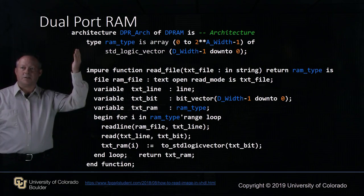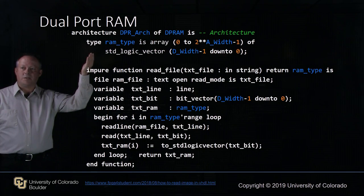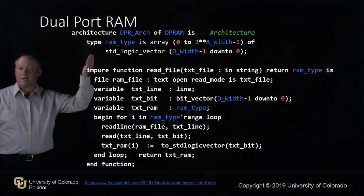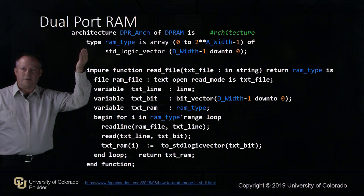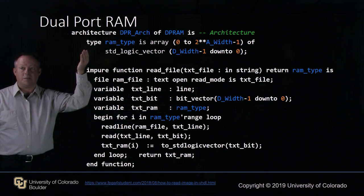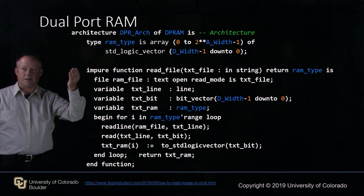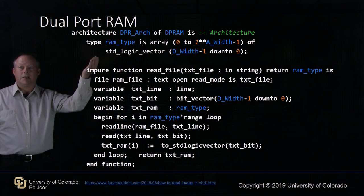In our architecture we're going to create a new type. This type is going to be called RAM type — an array from 0 to 2 to the power of address width minus 1, of standard logic vector data width minus 1 down to 0.